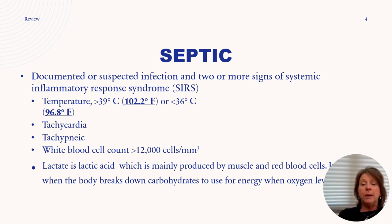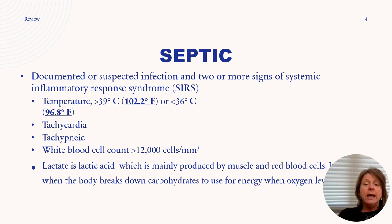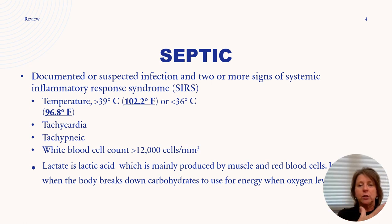Tachycardia and tachypnea are present as the body tries to oxygenate and compensate. A key difference in septic shock from other shocks is a white blood cell count greater than 12,000. If you see a WBC above 12,000 along with other signs and symptoms, you need to be thinking septic shock.